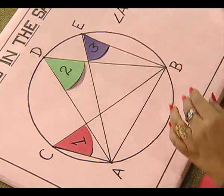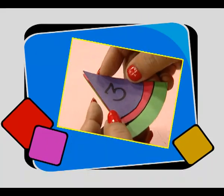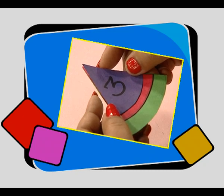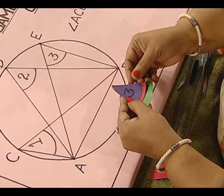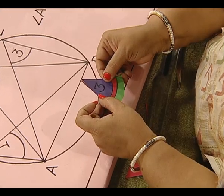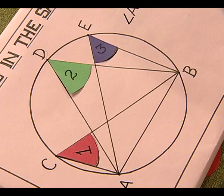Now we are supposed to verify that these angles are of equal measure. How do we do it? We just pick up these replicas and arrange them one above the other. Yes, what do you notice? We observe that all these angles have equal measure. That means angle ACB is equal to angle ADB is equal to angle AEB.